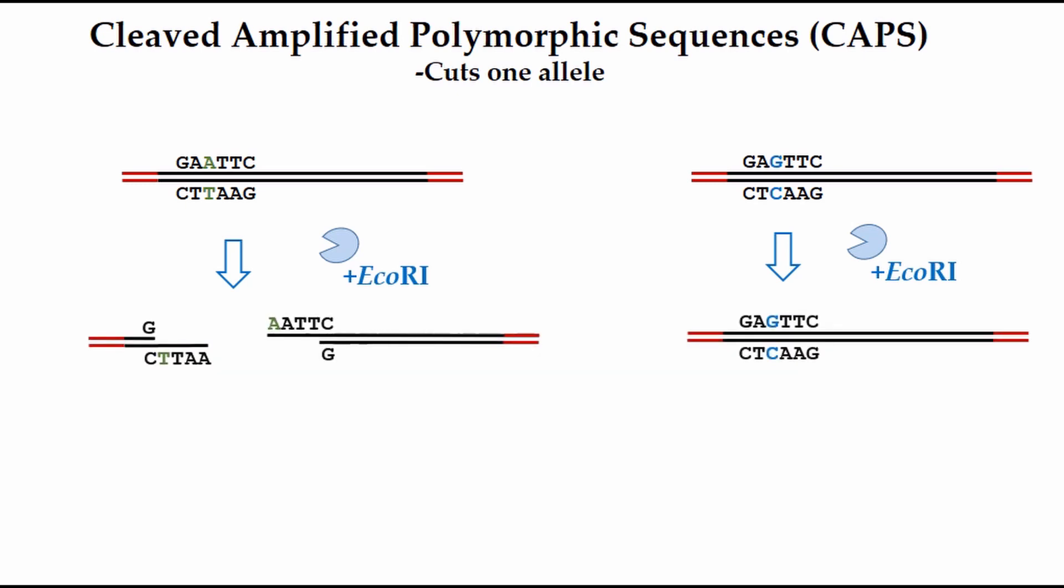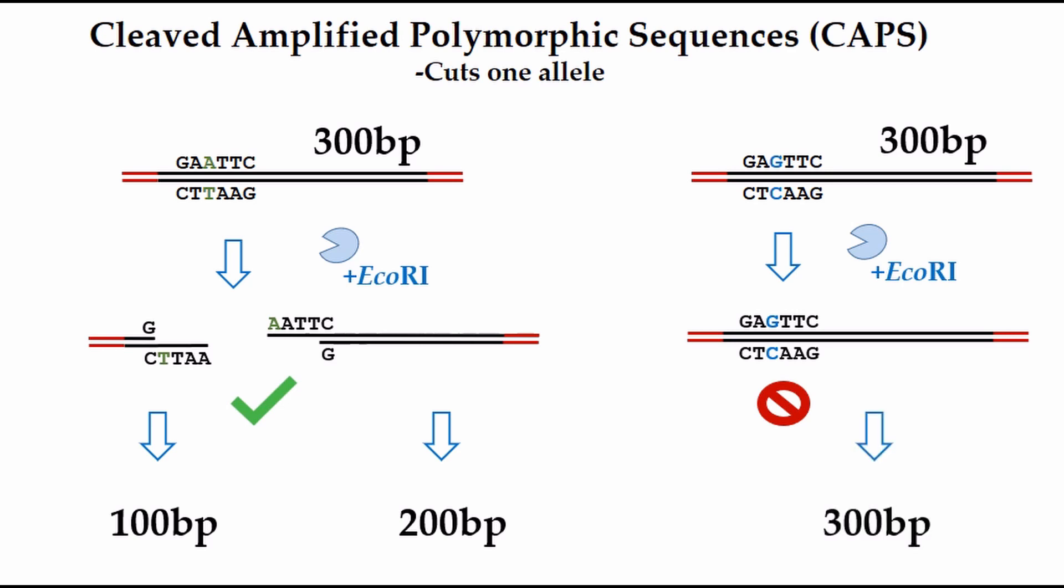If the original DNA sequence amplified by PCR was, for example, 300 base pairs in length, the resulting cut sequences could be 100 and 200 base pairs. Samples with a different allele will not be cut and will remain at 300 base pairs in length.